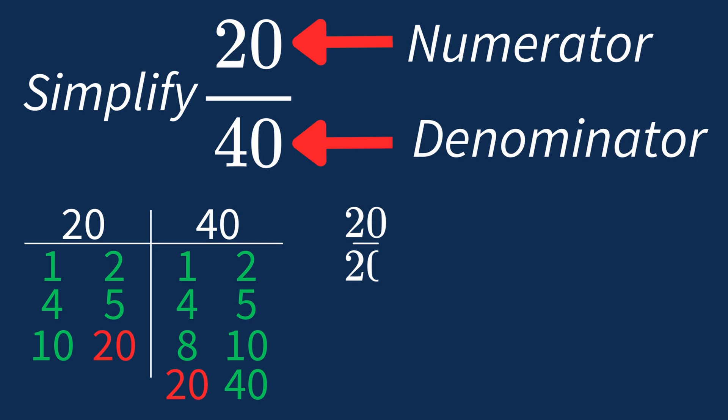Dividing the numerator 20 by 20 gives us 1. Dividing the denominator 40 by 20 gives us 2, since 40 divided by 20 is 2.